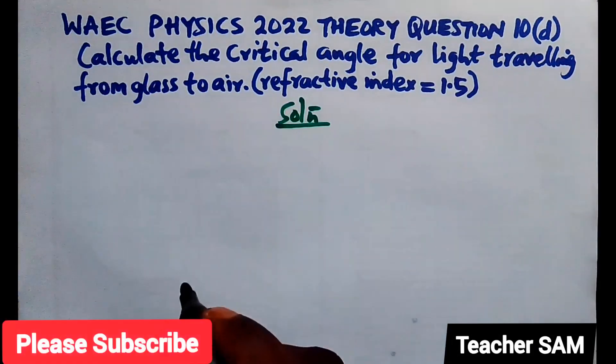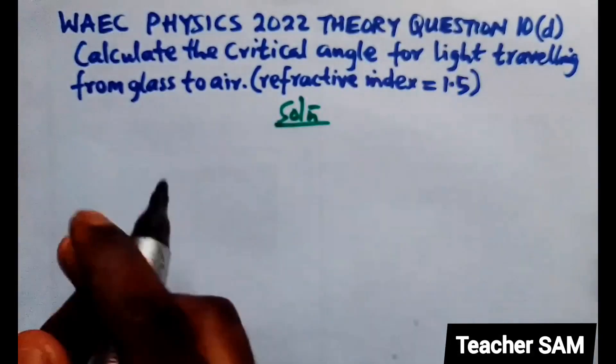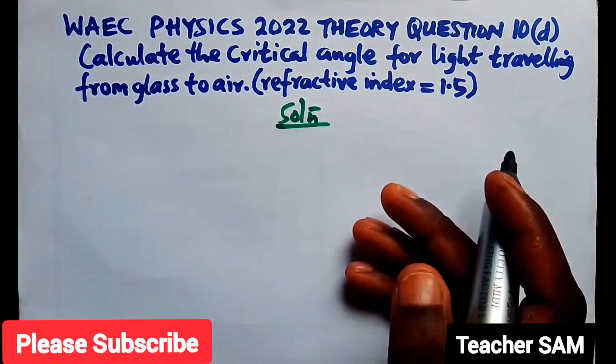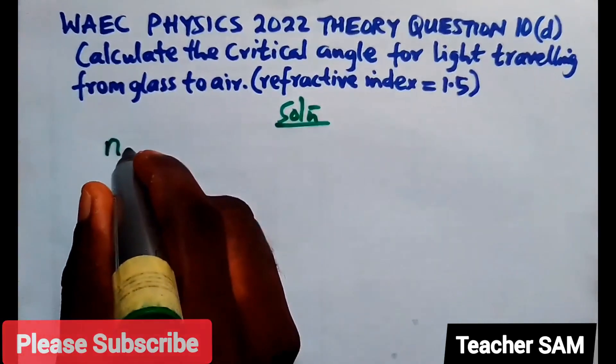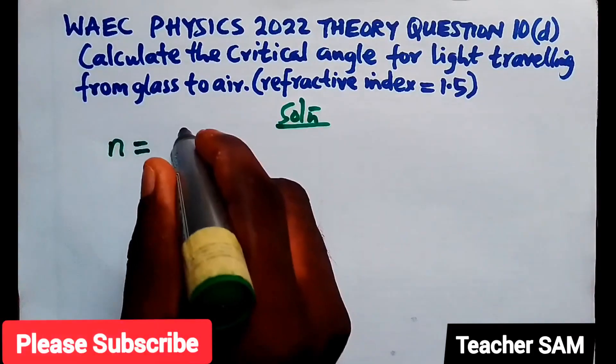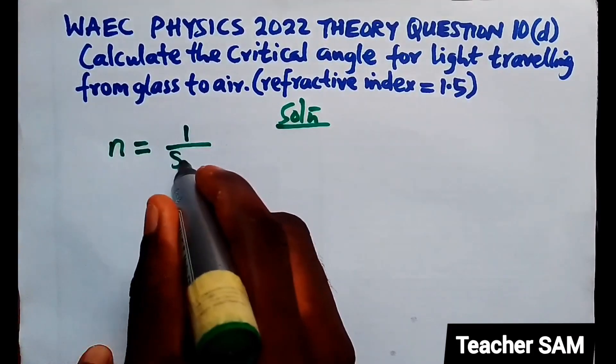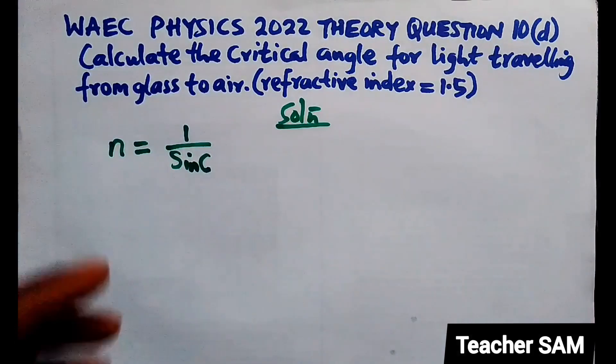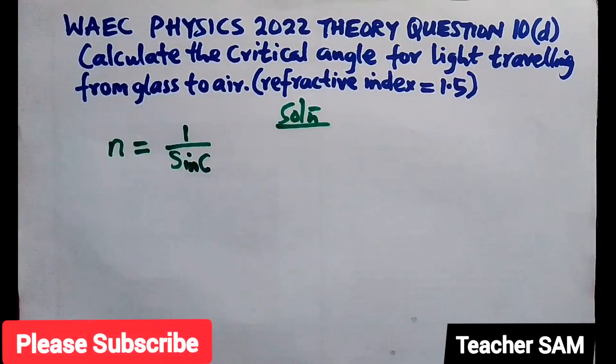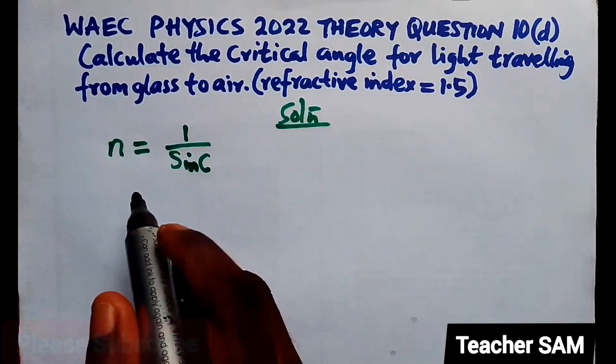We know that for critical angles, the refractive index n equals 1 over sine of the critical angle. So n = 1/sin(c). This is the formula to calculate the critical angle for this kind of wave traveling.